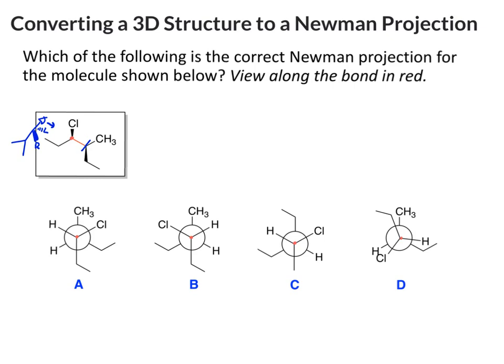It's also helpful if you draw in the hydrogen at the 3D centers. So they're implied, but we know that they're there. There's a back hydrogen here, a back hydrogen here.